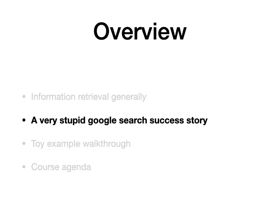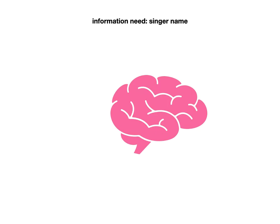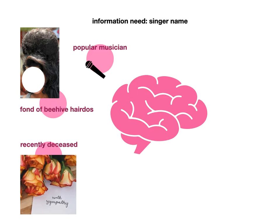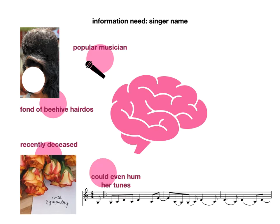Here's a very stupid Google search success story. Once upon a time I was lazing around in grad school and I had one of those moments where you completely lose the plot. There was a singer whose name I could not remember. I knew her songs, I knew who she was, but not her literal name. I could remember a few things: she was a popular musician, she was fond of beehive hairdos, she had recently died, and I could hum some of her tunes. But I couldn't get her name — my human information retrieval system did a bad job.